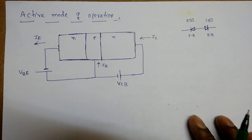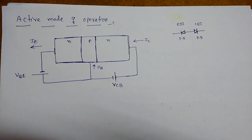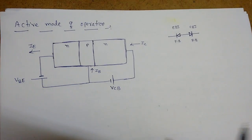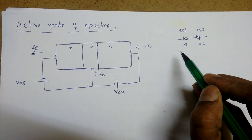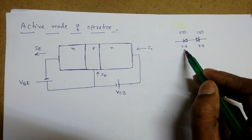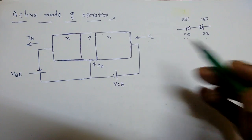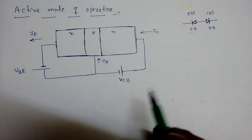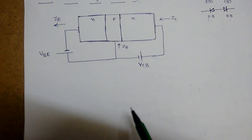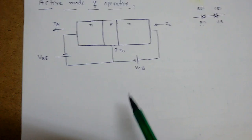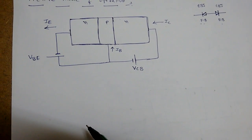In this lecture, we are going to deal with the operation of the bipolar junction transistor in active mode. For active mode, the emitter-base junction should be forward biased and the collector-base junction should be in reverse bias. We have to answer why it is called active mode.